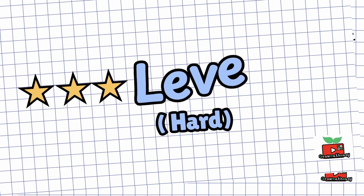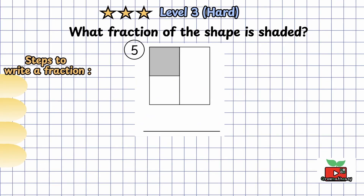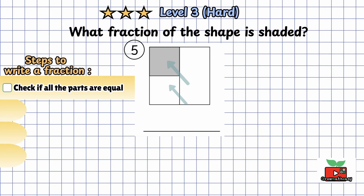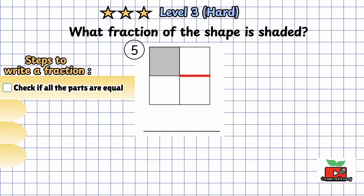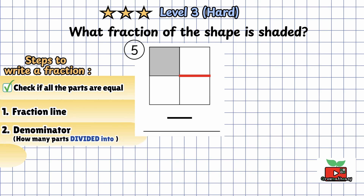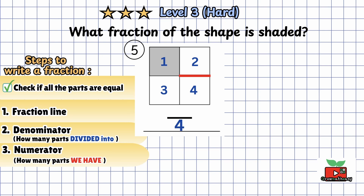Let's try level 3 — the hard question. Question 5: what fraction of the shape is shaded? First, check if all the parts are equal. Oh — two parts are small and one is big; they are not equal. Let's draw an extra line. Now all the parts are equal, and we can use a fraction to show the shaded part. Draw a fraction line. Write the denominator: the shape is divided into four parts, so we write 4 at the bottom. Write the numerator: one part is shaded, so we write 1 on top. The shaded part is 1 quarter of the shape.